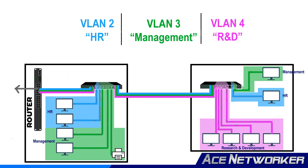In this example, VLAN 2 is chosen for HR. The port connected to the management person's computer is configured in the management VLAN, and all other ports are configured in the research and development VLAN. When you move the HR person into the building on the right, you configure their port on that switch into VLAN 2 so they can have connectivity to the HR group's virtual local area network. They're all kept separate but share the same physical switch.